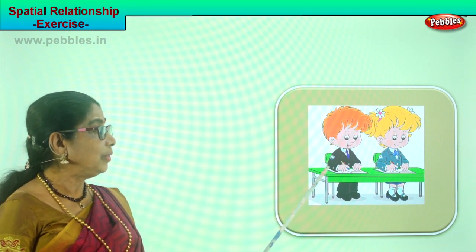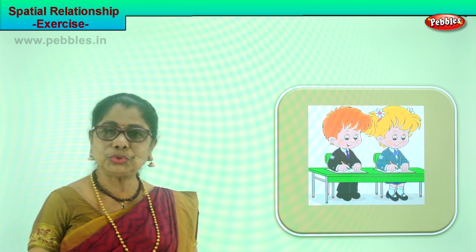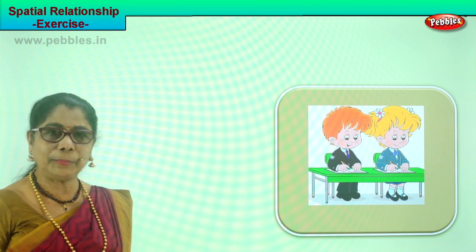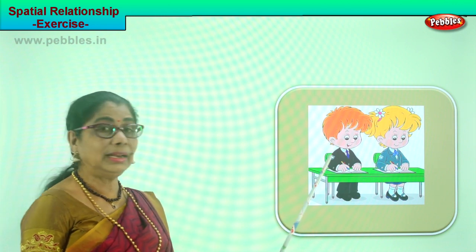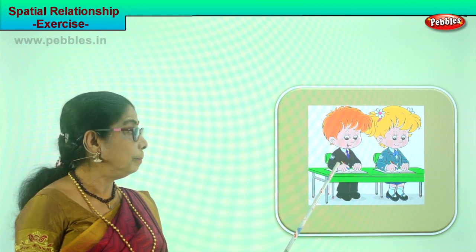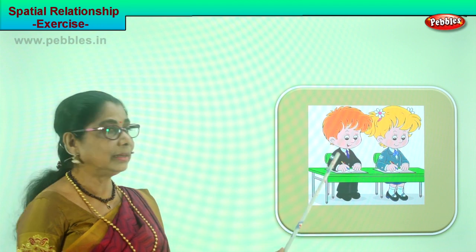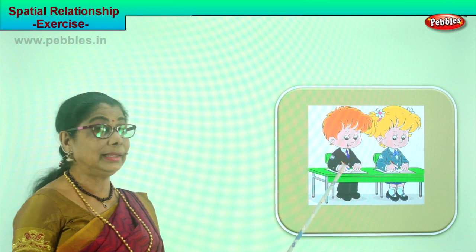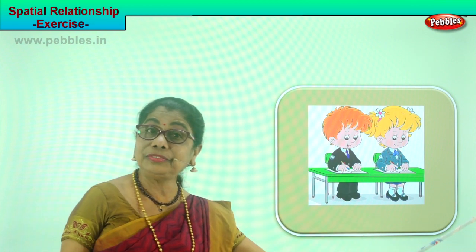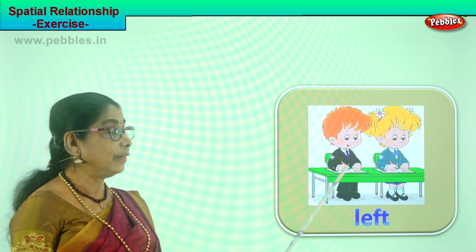Now we have two little children sitting here. In the class you are all sitting in a row, two by two or four by four, one behind another. There is a little boy in blue and a little boy in black suit. There is a little girl and a little boy. Where is the girl sitting? The girl is sitting on the left side of the boy.